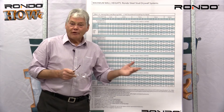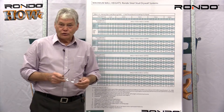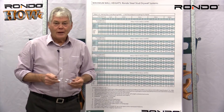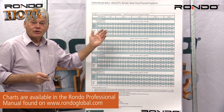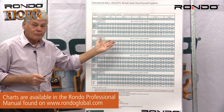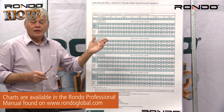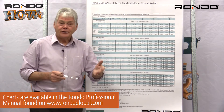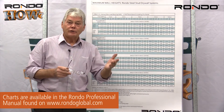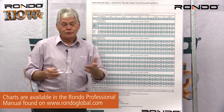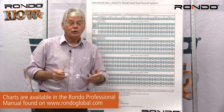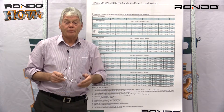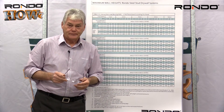Rondo's charts are available in the professional manual. We have one chart designed for plasterboard and another chart designed for brittle substrates, for example CFC or compressed fibrous cement.